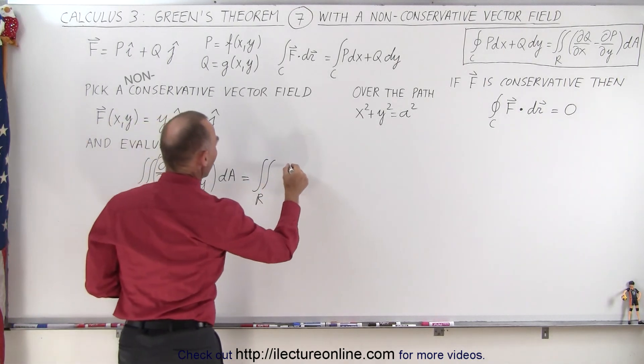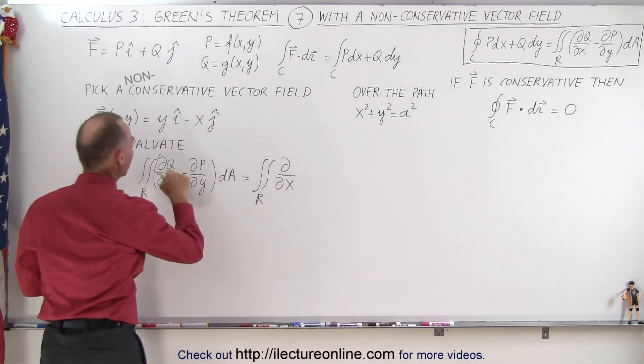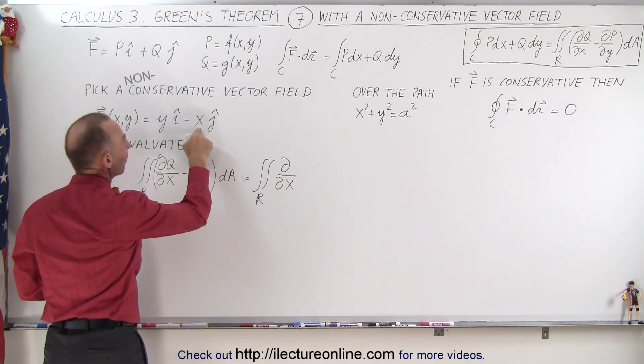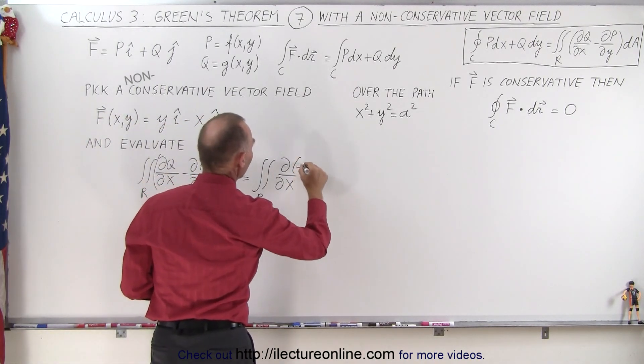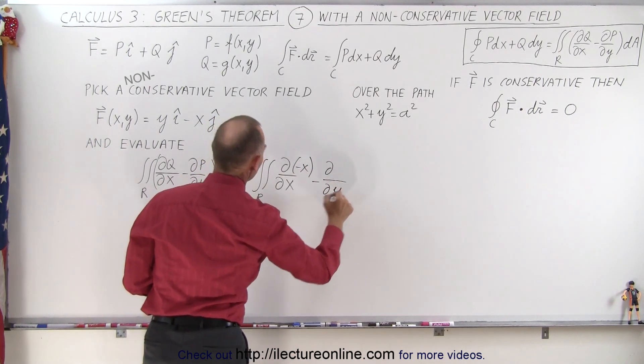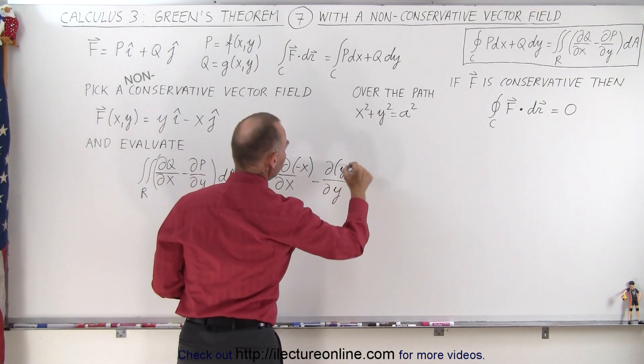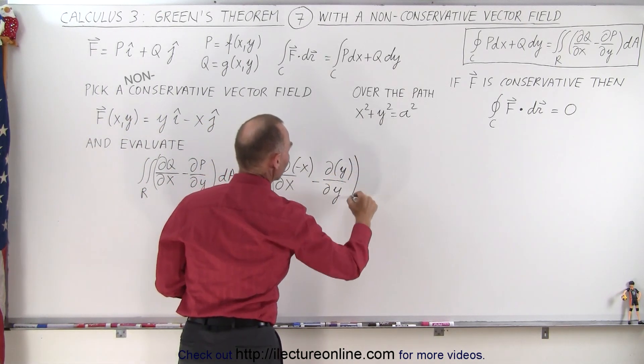We're going to then take the partial derivative with respect to x of Q. In this case, Q is equal to minus x. So we put a minus x there minus the partial derivative with respect to y of P, and P is defined as y. And the whole thing times dA.